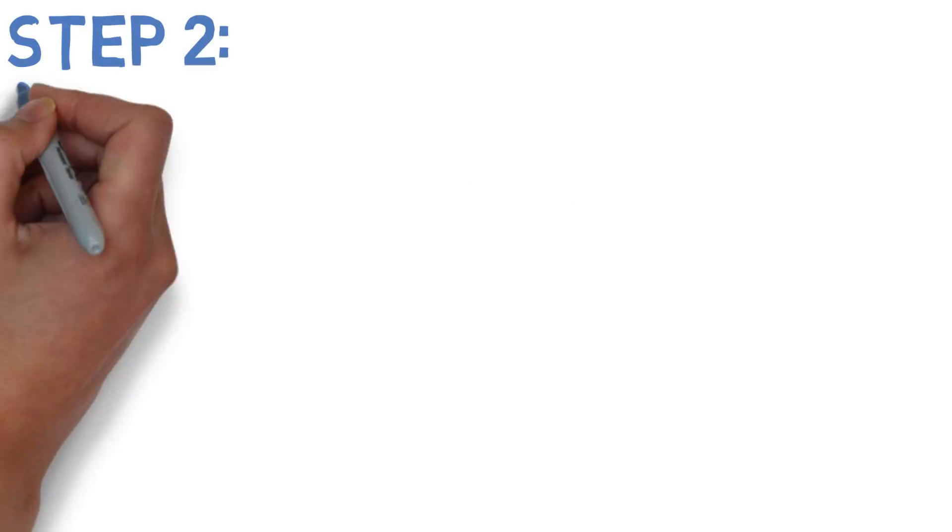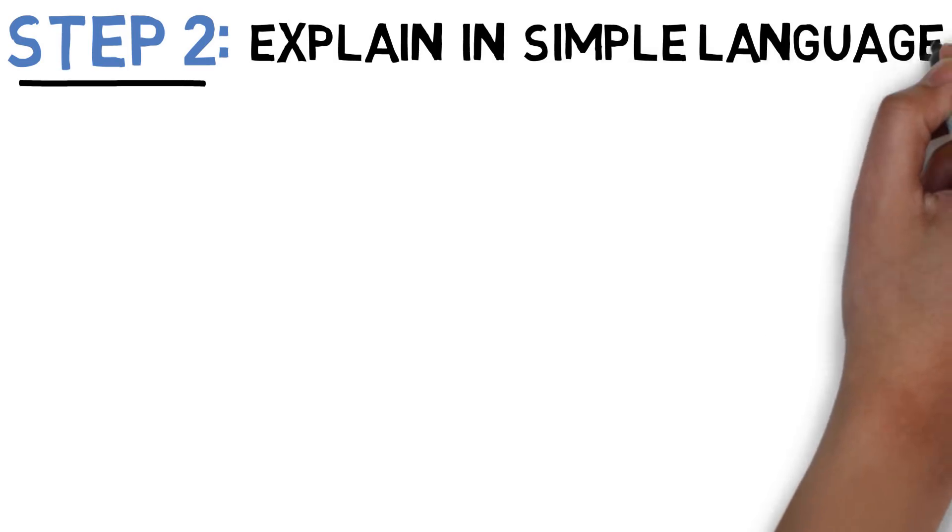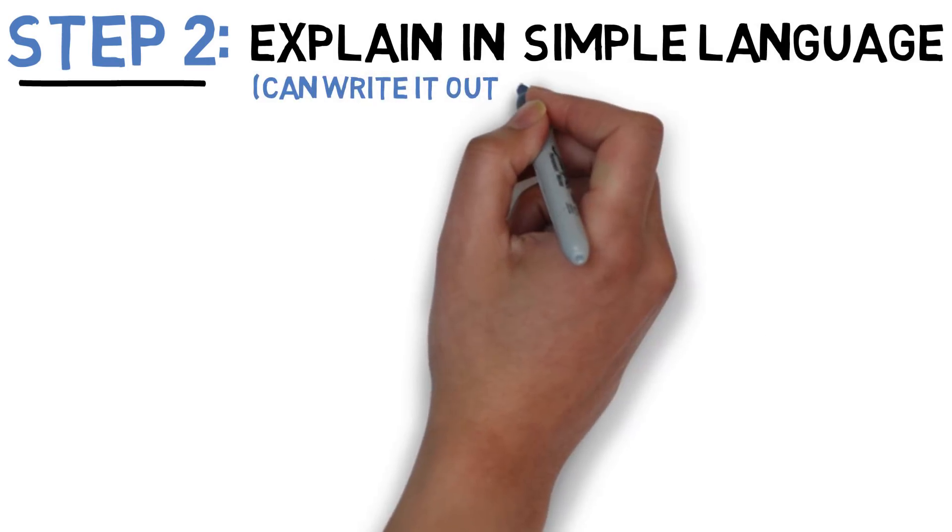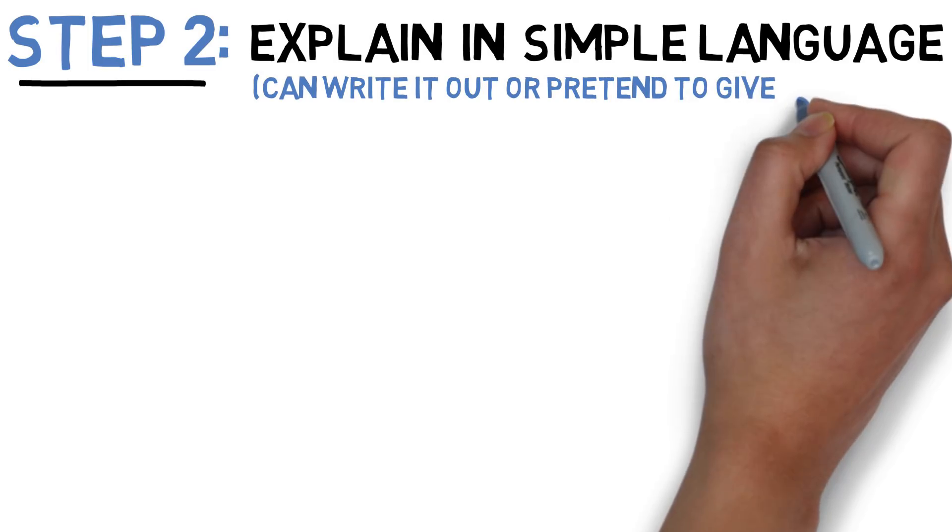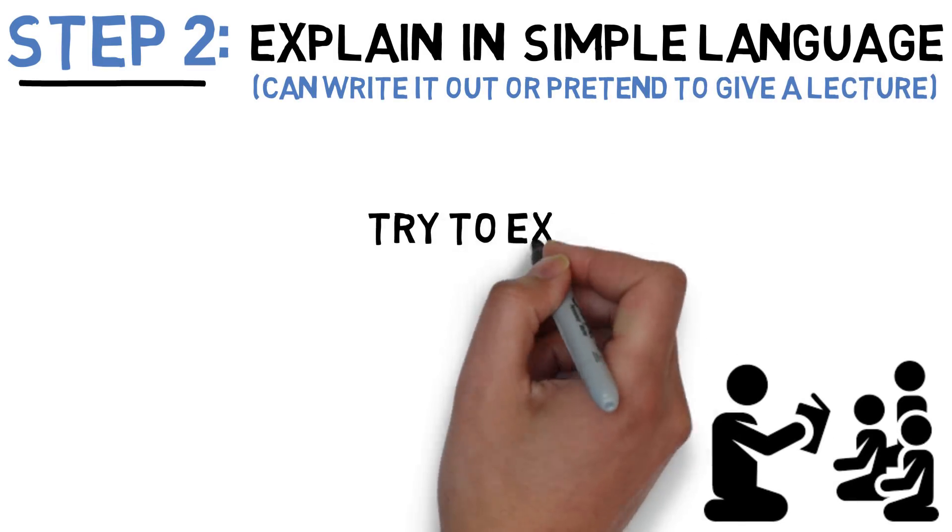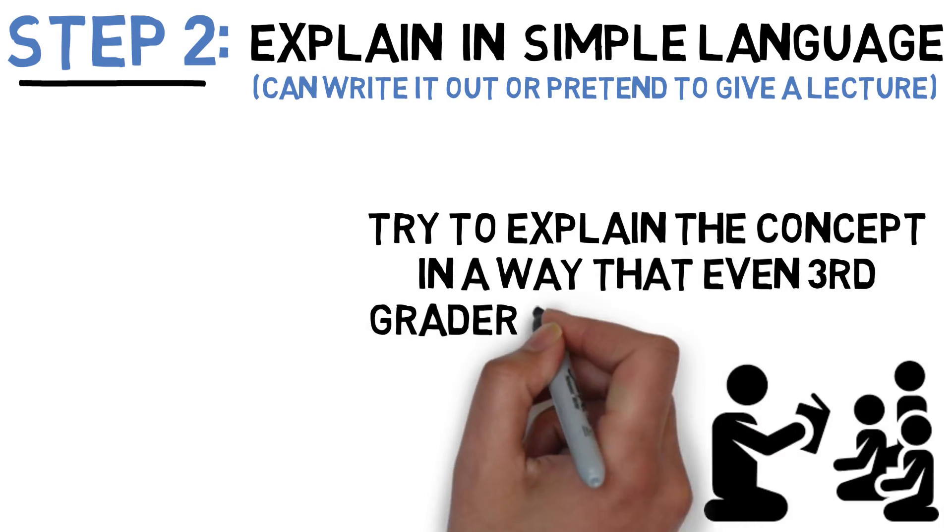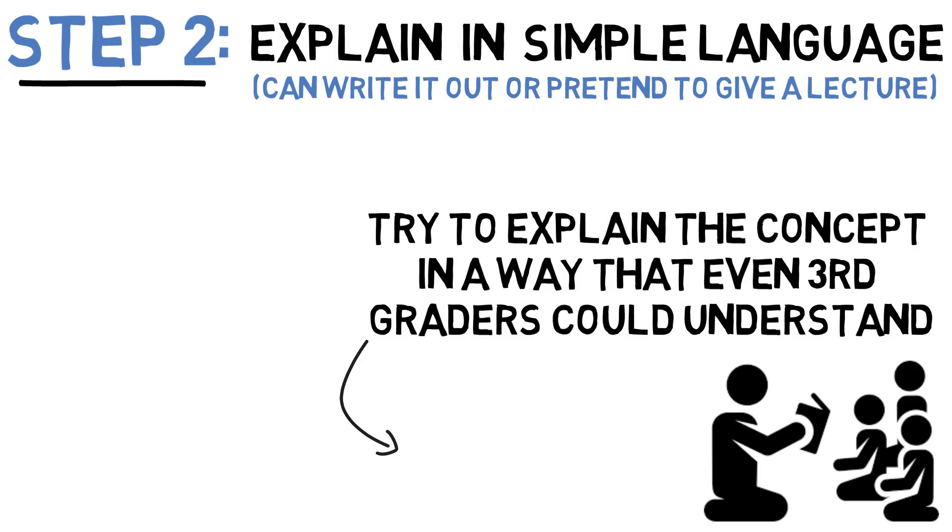The second step is to try to explain how this concept works as simply as you can. You can write your explanation out on a piece of paper or you can pretend to give a lecture. Regardless of what you pick, try to explain the concept as if you are teaching a class of third graders. The reason I say third graders is because you want to explain this topic as simply as you can. This means no complicated vocabulary and simple, simple language. This forces you to explain the concept at its core, which tests how much you really understand it.